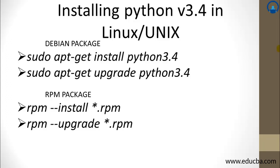If you already have Python installed in your operating system and want to upgrade it, type: sudo apt-get upgrade python3.4, and it will upgrade you to the latest version. 'Sudo' means 'super user do' — just as we have Administrator in Windows, Linux has its own administrator called the super user, and you need root access in order to do that.